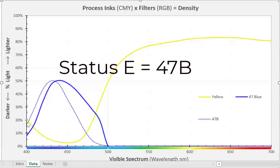So the status E filter, 47B, lets less light in. And because it lets less light in, it'll have a higher density.